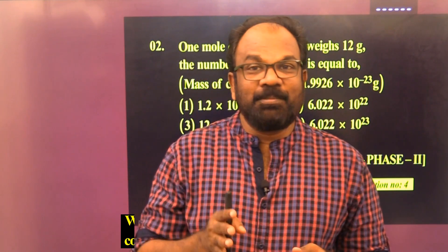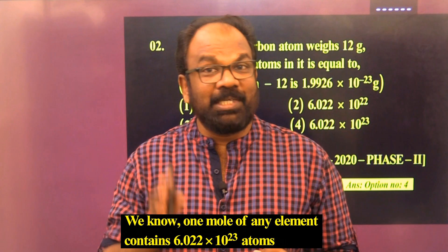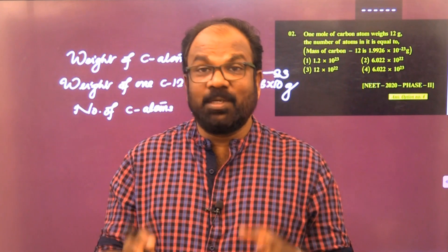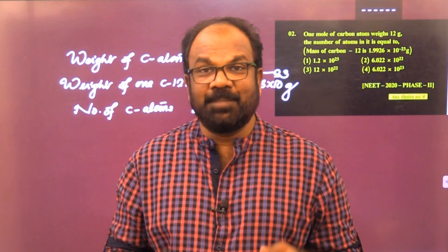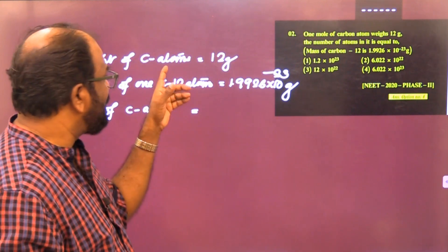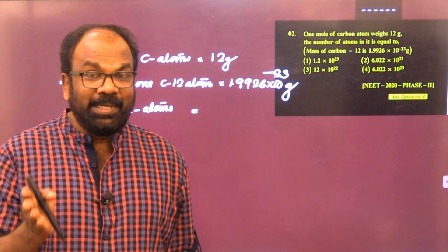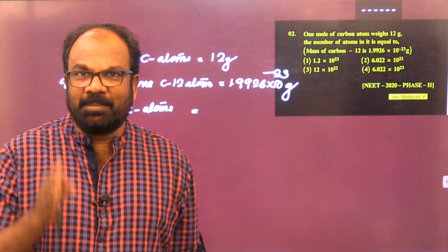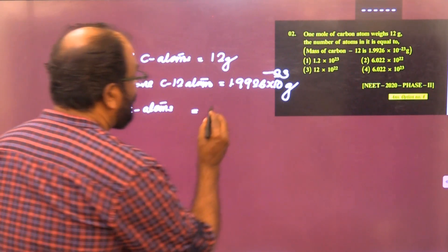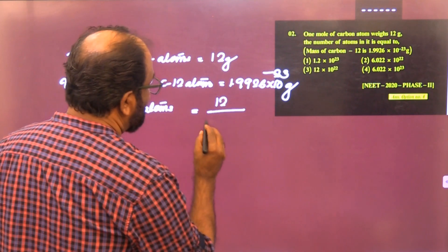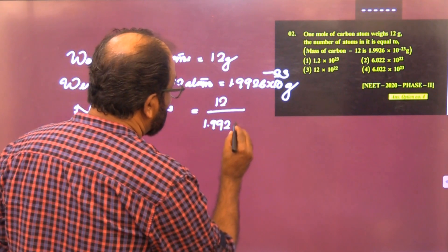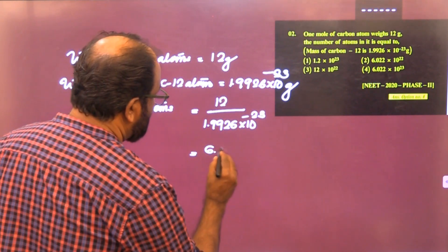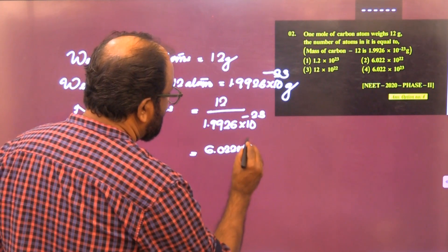This is a simple question. We know one mole of any substance contains 6.022 × 10²³ particles, so the answer is option 4. We can verify using the given data: number of carbon atoms in 12g = 12g ÷ (1.9926 × 10⁻²³ g) = 6.022 × 10²³.